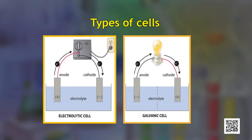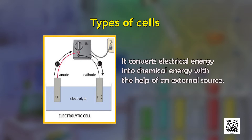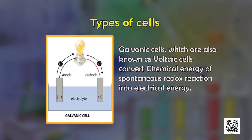There are two types of electrochemical cells which are used to make these transformations: electrolytic cells and galvanic cells. Electrolytic cells convert electrical energy into chemical energy with the help of an external source. Galvanic cells, also known as voltaic cells, convert the chemical energy of spontaneous redox reactions into electrical energy.